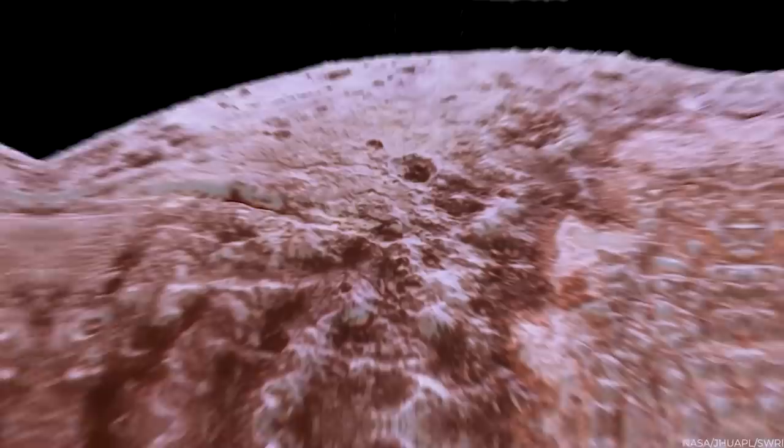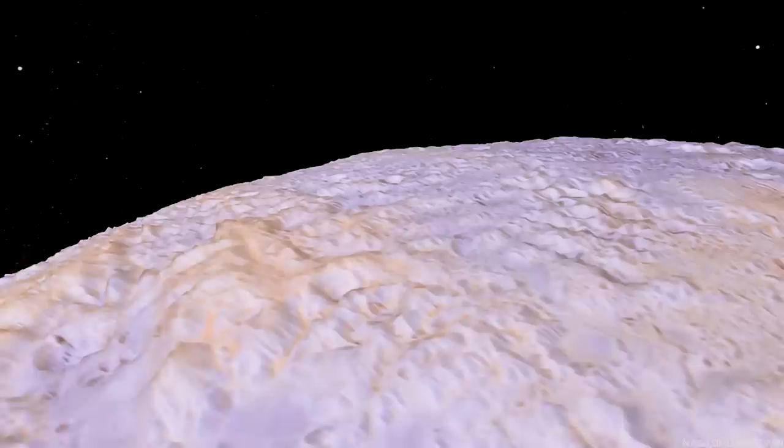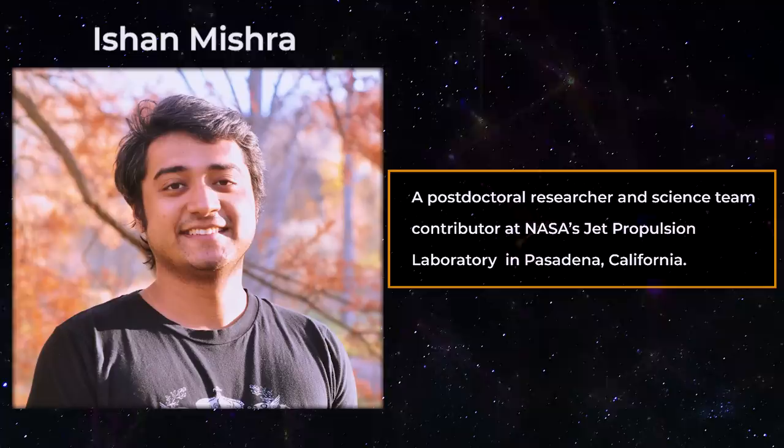The fact that they appear under specific conditions in specific locations tells us about how the surface responds to environmental changes. The discovery of these features simply adds to our understanding of the processes that shape Pluto and other icy planets in our solar system, as well as highlighting the complexity, dynamic nature and diversity of planetary surfaces such as Pluto's, according to Ishan Mishra, a post-doctoral researcher and science team contributor at NASA's Jet Propulsion Laboratory in Pasadena, California.